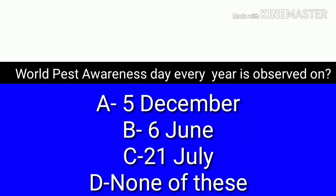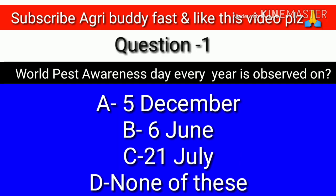World Best Awareness Day is observed every year on: option A - 5th December, option B - 6th June, option C - 21st July, option D - none of these. The answer is 6th June. Every June 6th is World Best Day, sometimes called World Best Awareness Day.